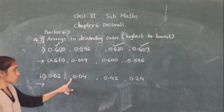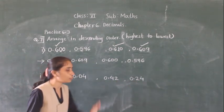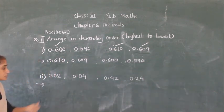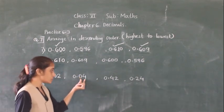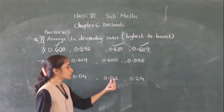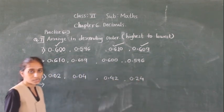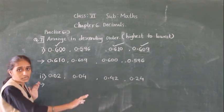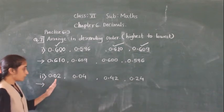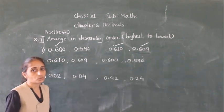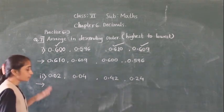Next example: arrange 0.02, 0.04, 0.04, and 0.24 in descending order. Observe that after the decimal point, two digits are given everywhere. The number of digits after the decimal point is already equal for all numbers, so no zeros need to be added.